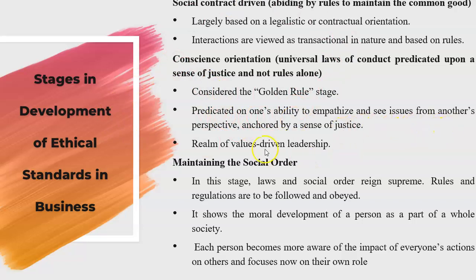Values-driven relationship or leadership is very important — the values of ethical standards are taken together and applied in business. The sixth stage is maintaining the social order. In this stage, laws and social order remain supreme; rules and regulations are to be followed. It shows the moral development of a person as part of the whole society, where each person becomes more aware of the impact of everyone's actions on others.